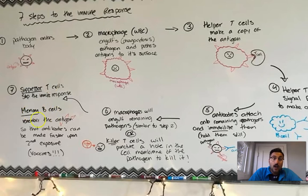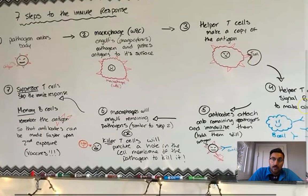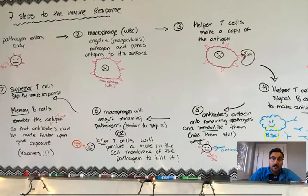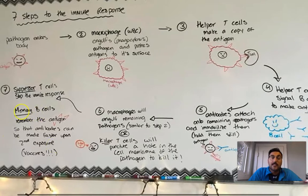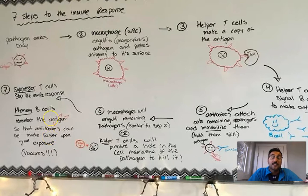Memory B cells are going to remember the antigen, those red triangles, so that the next time the body comes into contact with those antigens, we will have a much faster, much stronger immune response. So we don't have to wait for macrophages to express the antigens on the surface, and then T cells to copy the antigens, and then B cells to make antibodies because we're already going to have memory B cells, which already have antibodies produced, and they're able to produce them faster the next time around because they've already done it once before.